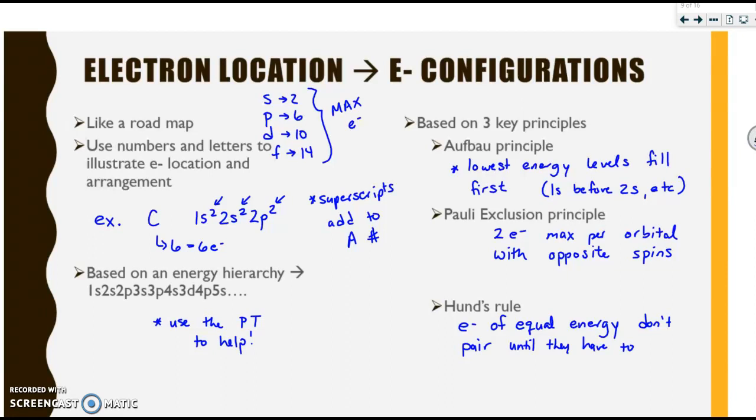They are based on three key principles. The Aufbau principle, which says that the lowest energy level will always fill first. So 1s fills before 2s, which fills before 2p, which fills before 3s, so on and so forth. We have the Pauli exclusion principle that says two electrons max per orbital, and they have to have opposite spins. So one electron goes clockwise, the other counterclockwise. And finally, we have Hund's rule that says electrons of equal energy do not pair until they have to. So if you have 3p orbitals and you have 3p electrons, each orbital would get 1 before anyone gets 2.